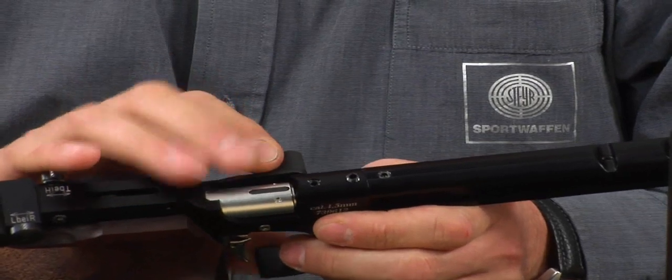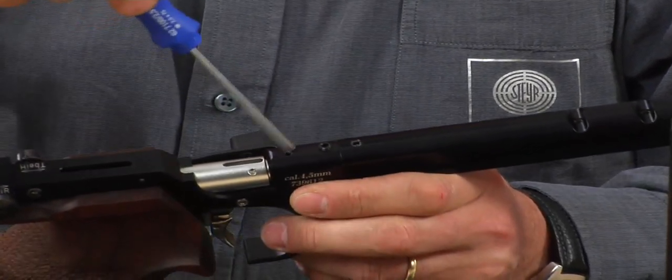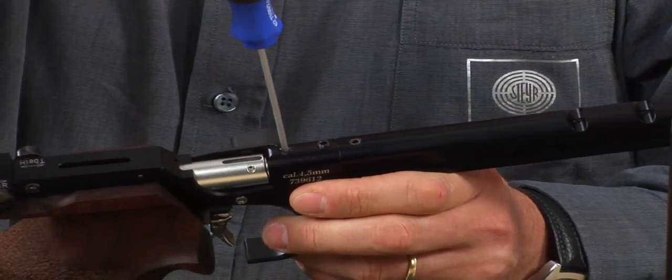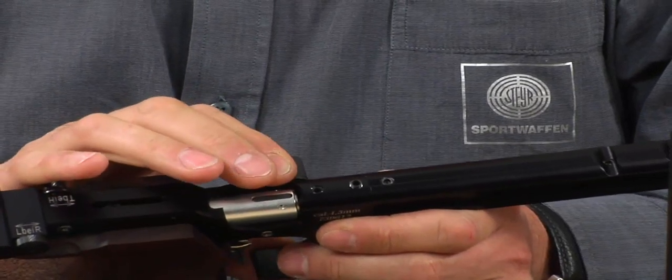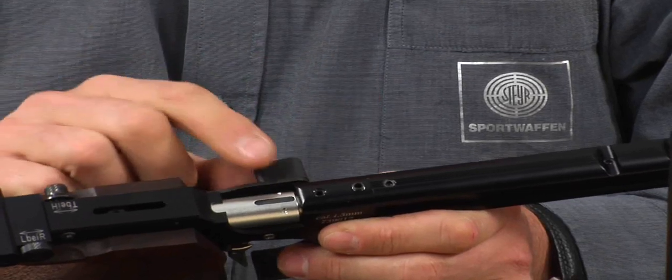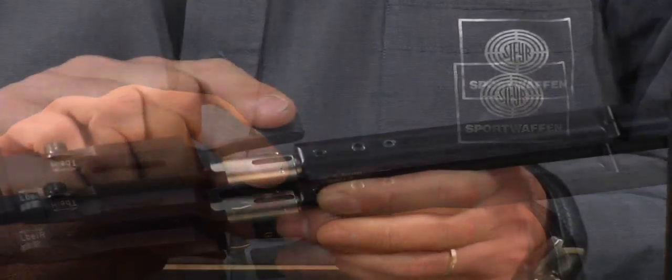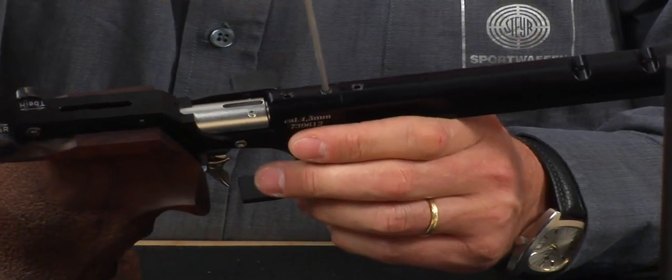If it still opens too easily, tighten the screw further. The bolt should no longer open by itself. Equally, you should not need too much force to open the lever. The adjustment is now perfect. Finally, tighten the second screw to secure the barrel.